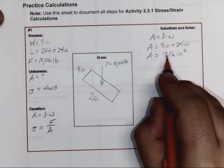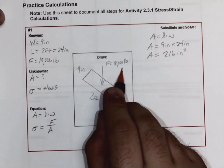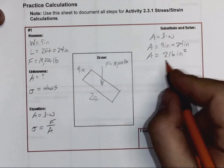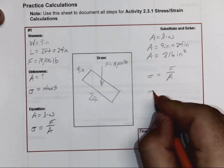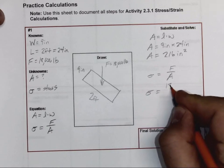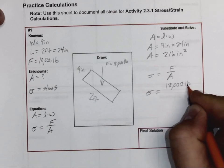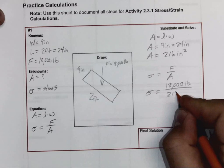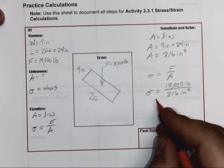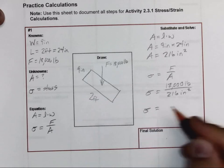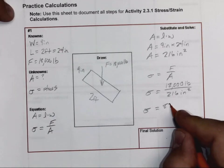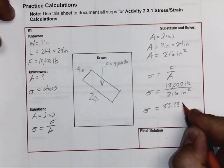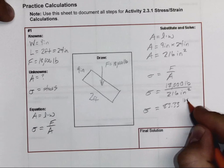As I take a look at the rest, so I have my area now, I've got a force in my knowns. So now I can solve for the stress. Stress is force over area. My stress, I'm going to substitute 18,000 pounds divided by 216 square inches. And my final result, when I go through and run this in the calculator, I'm going to end up getting 83.33 pounds per square inch.